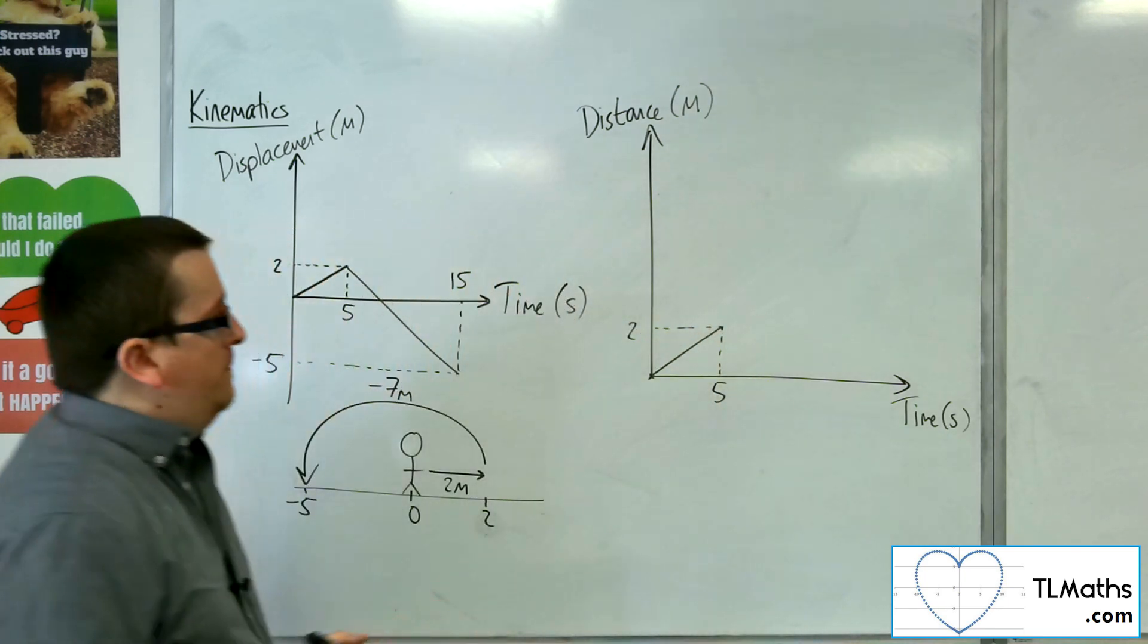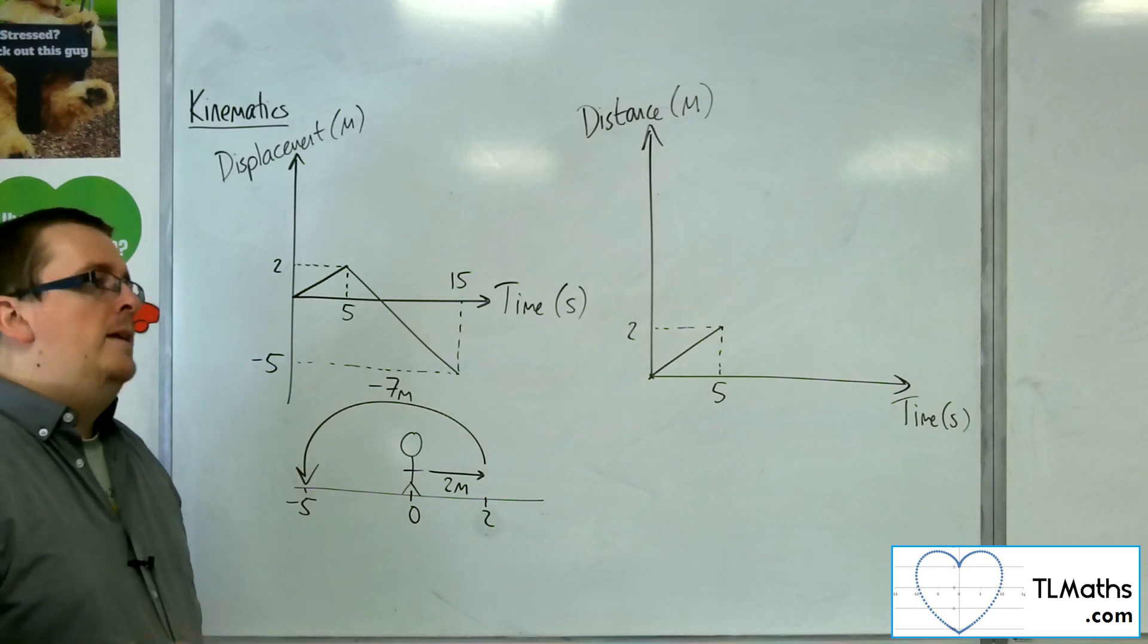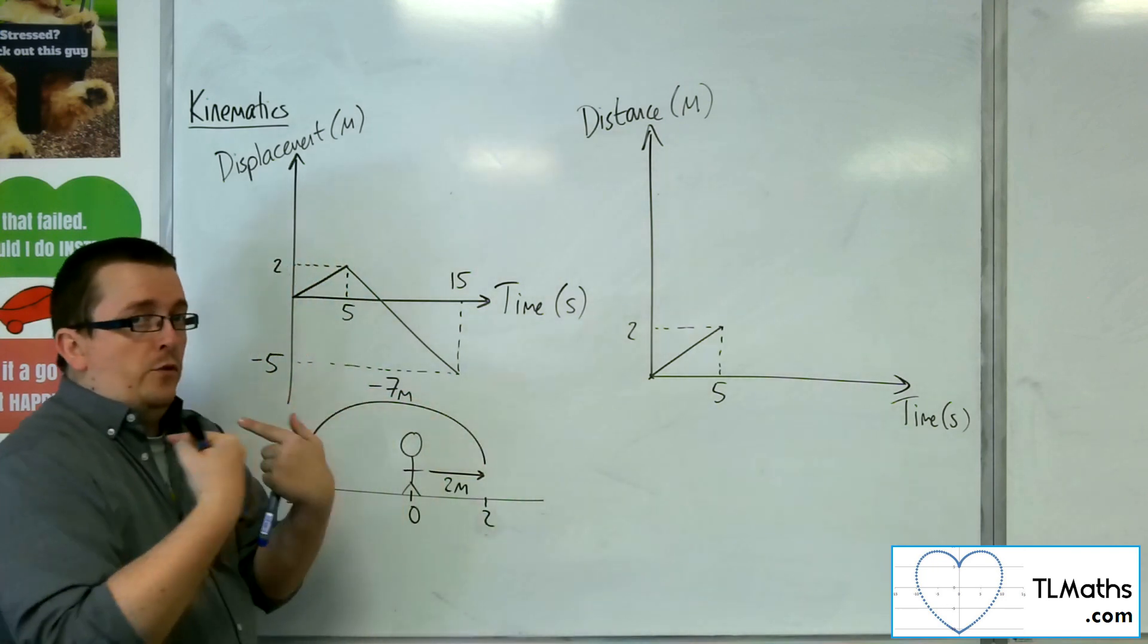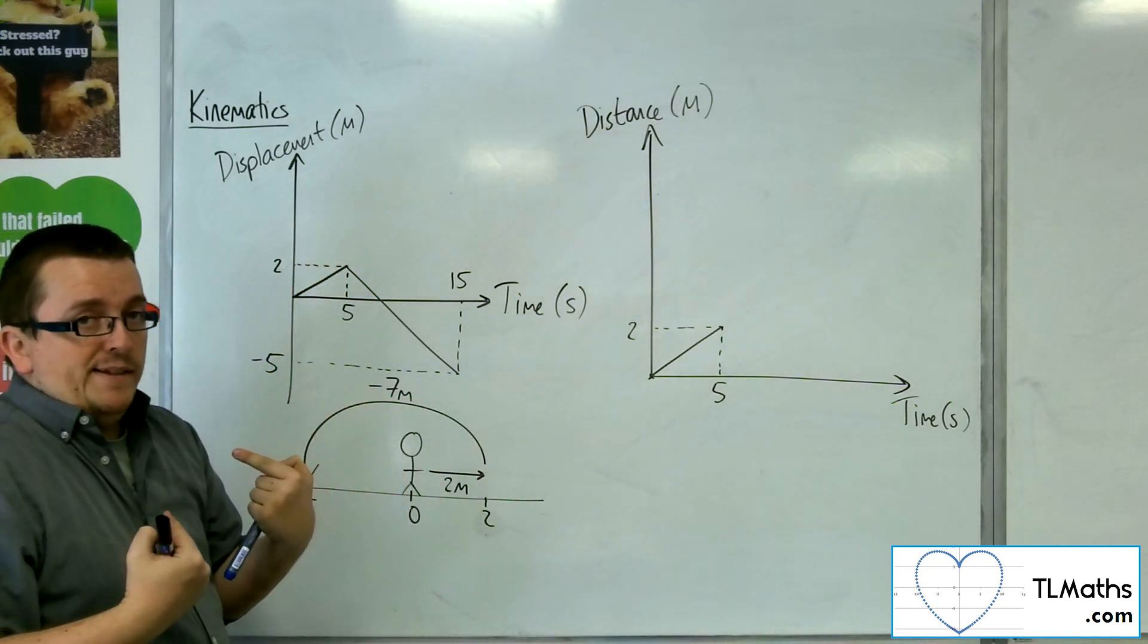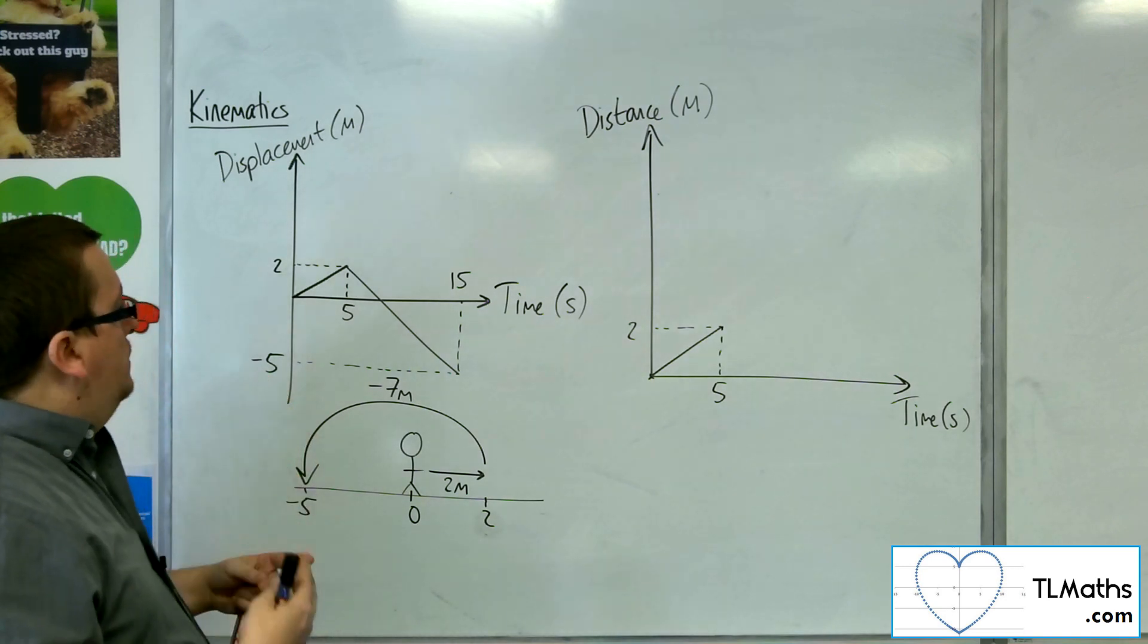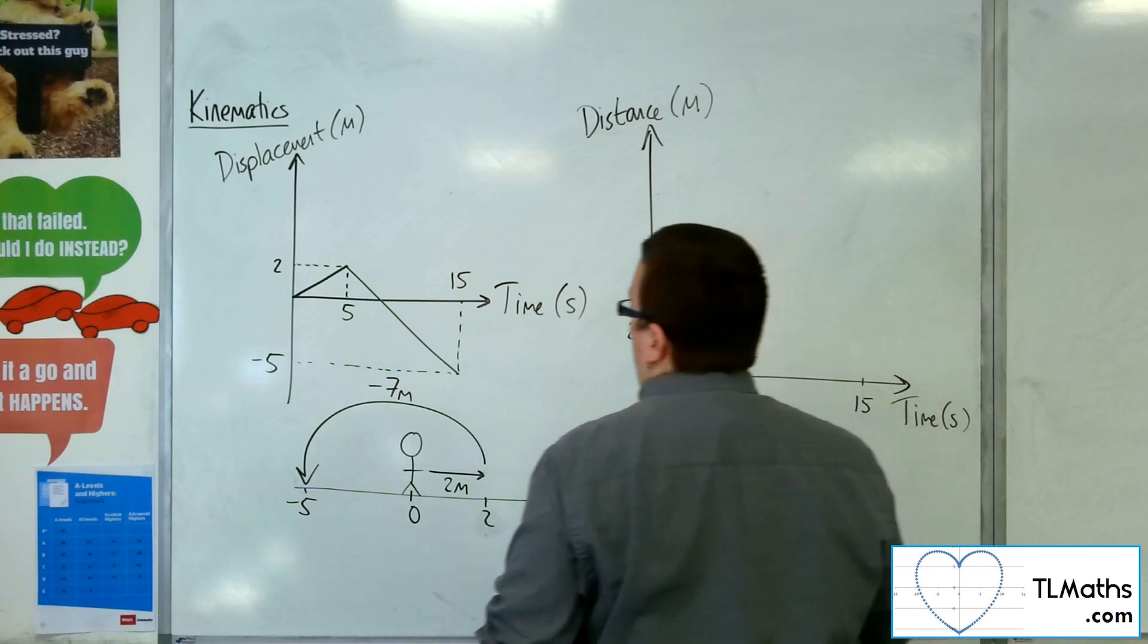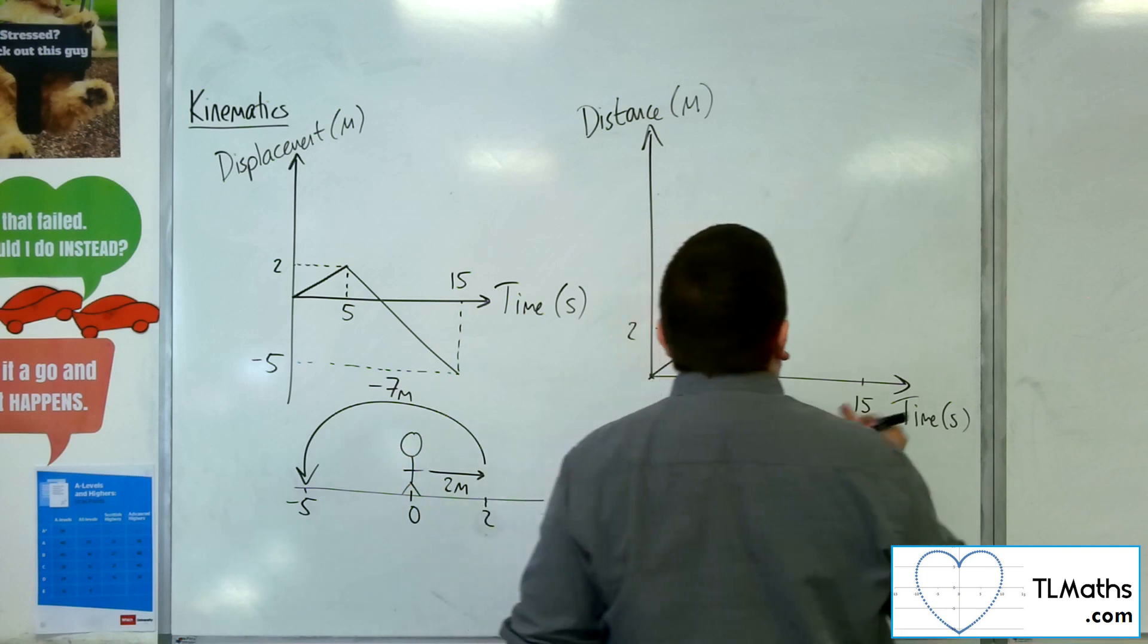So, at the moment, it looks pretty much identical to the displacement time graph. But now, because the person was walking back the other way, the displacement became negative. But distance does not. So, in the next ten seconds, they walk seven metres, don't they?